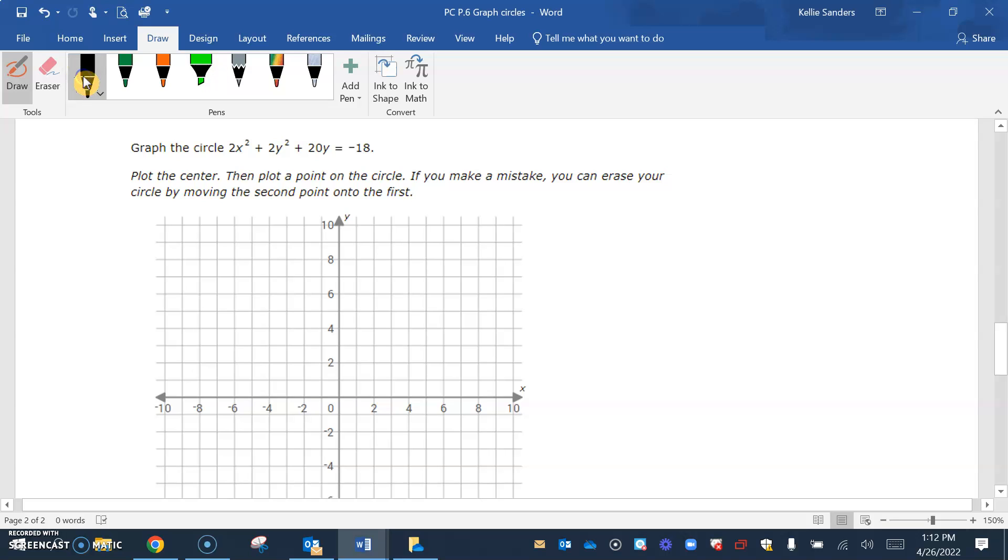Everything is even, so as I am putting my x's and my y's on one side, which they already are, I'm actually going to divide by 2 also, because I need that to be a 1x squared and a 1y squared. So I divided everything by 2 and I made a space for my y's.